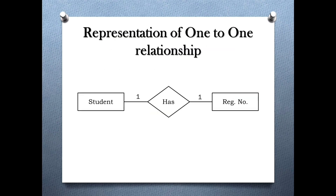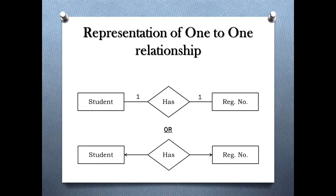Representation of one to one relationship: In an ER diagram, a one to one relationship can be represented either by writing '1' on both sides of the relationship set, or by giving arrows on both sides of the relationship set.